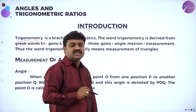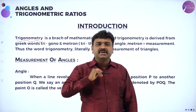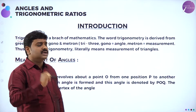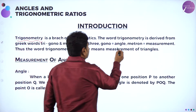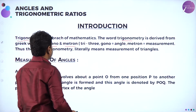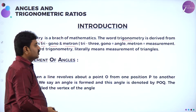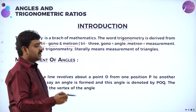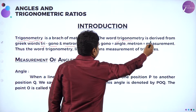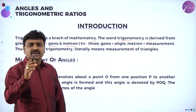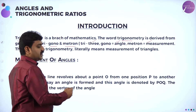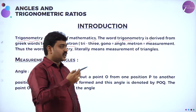Trigonometry is a branch of mathematics which deals with the measurement of triangles and problems related to triangles. The word trigonometry is derived from a Greek word. 'Tri' means three, 'gono' means angle, and 'metron' means measurement. So basically we deal with the study and measurement of triangles, and applications of triangles as well.